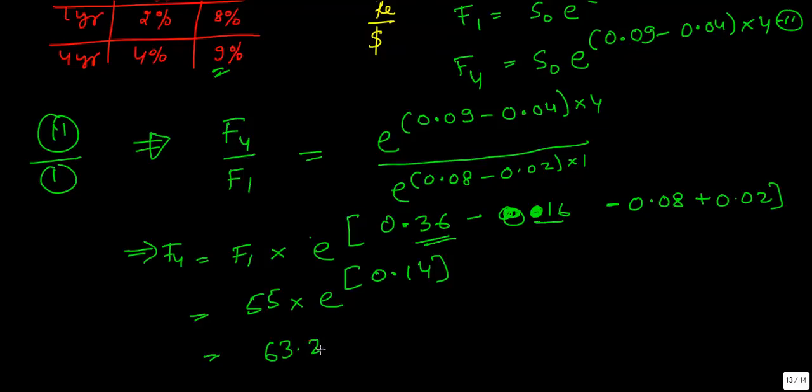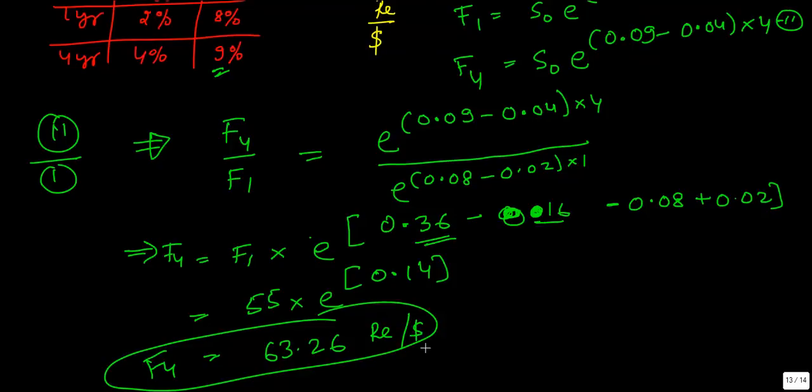so the forward rate for 4 year, it will be 63.26 rupees per dollar. This is how you will compute if the spot rate is not given to you. I hope this has clarified your concept. This is Ratan Gupta from KnowledgeVarsity. Thank you.